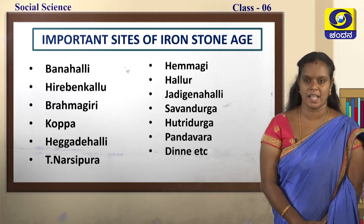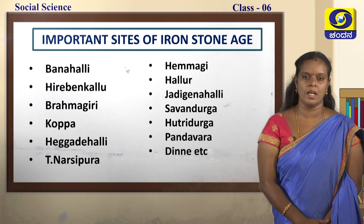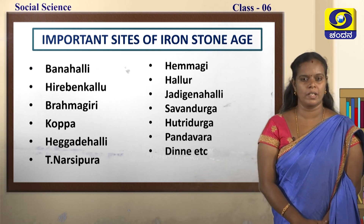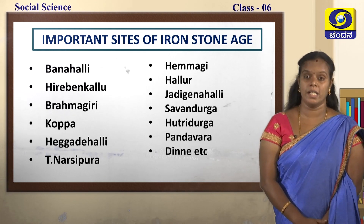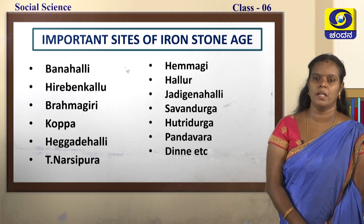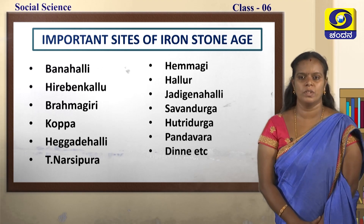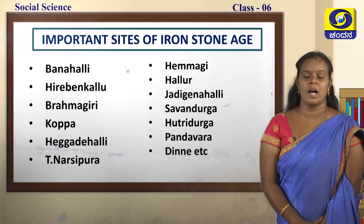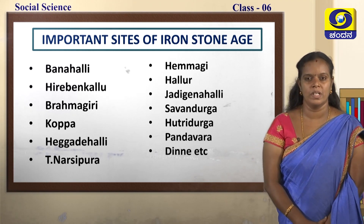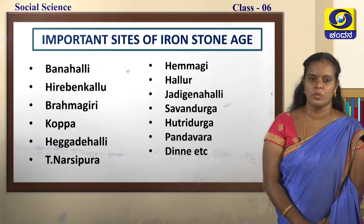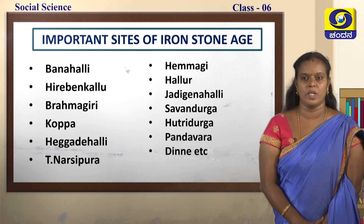The important sites of the Iron Stone Age are Banahalli, Hirabennakallu, Brahmagiri, Koppa, Hegadahalli, T. Narsipura, Hemagi, Hallur, Jadigenahalli, Savandurga, Hutridurga, Pandavara Dine, and others. I want all of you to look at page number 64 of your textbook, where on the map all these important sites are marked for you.